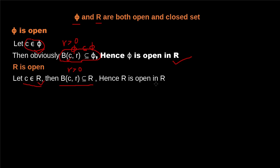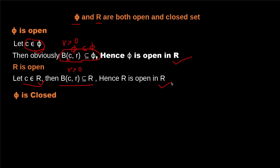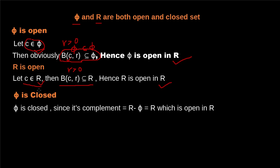Next, we'll show that these sets are also closed. We'll start with the empty set and show that φ is a closed set. A set is closed if its complement is open. The complement of φ is ℝ minus φ, which equals ℝ. We have already shown that ℝ is open in ℝ, so we can say that φ is a closed set because its complement is open in ℝ.